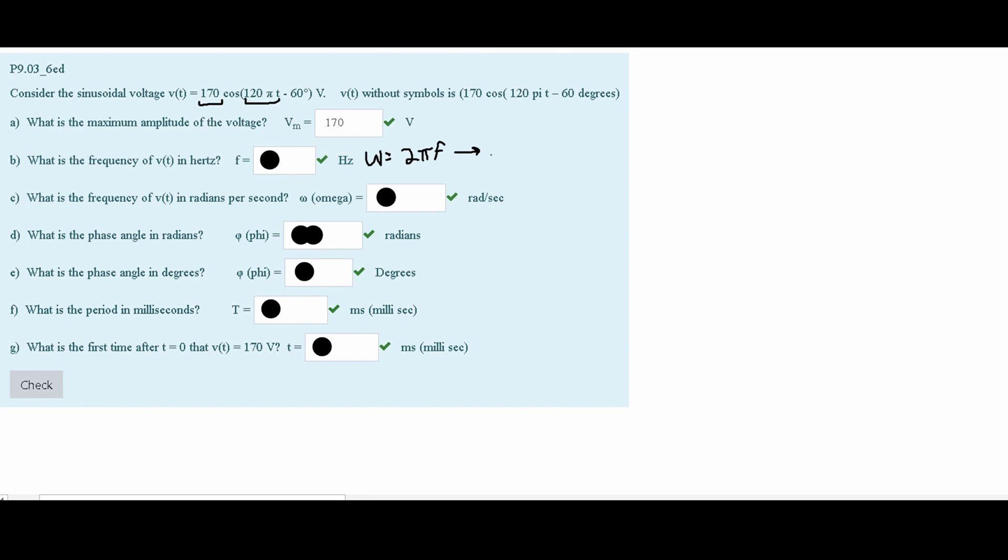Looking at our sinusoidal formula, we have 120 times π, so we will plug this in for our omega, and this is set equal to our 2πF. Now, in here, we are going to cancel some things out. We can cancel our π's out because they're on different sides, and now we are going to divide both sides by 2, and this will give us a 60 here. That means our frequency is going to be 60 hertz.